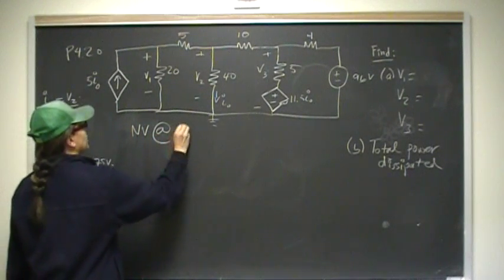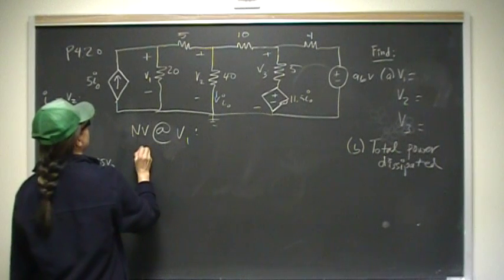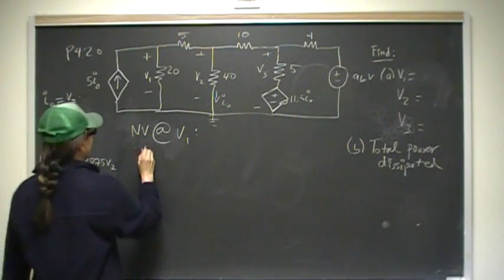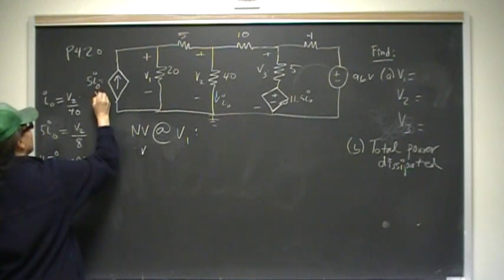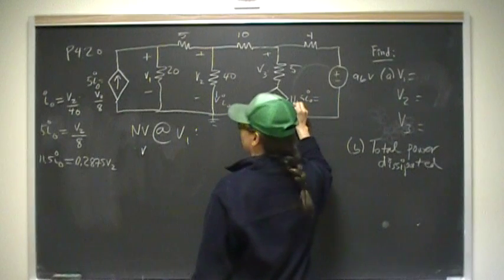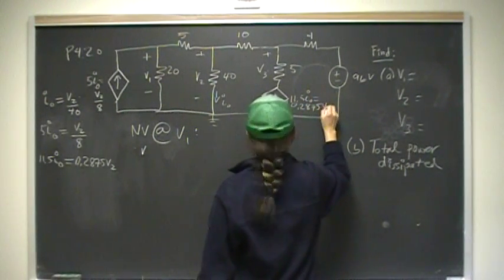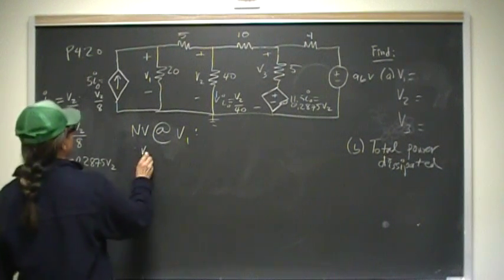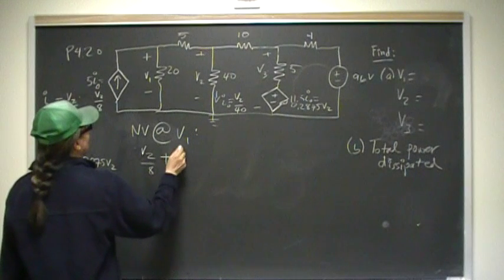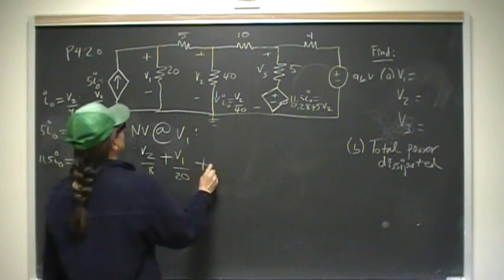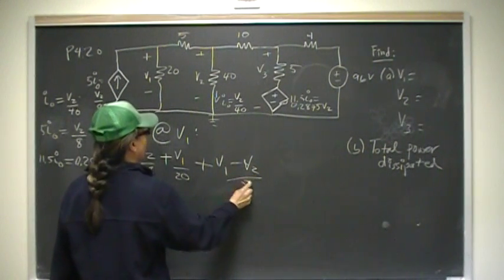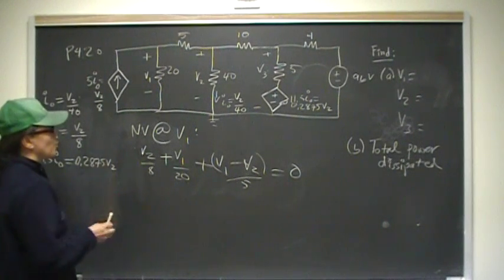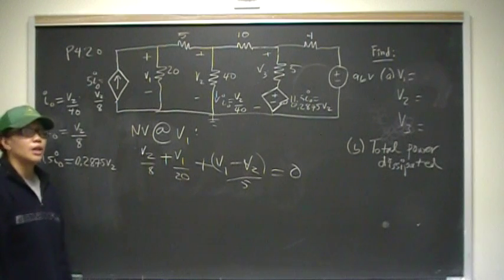We take the node voltage at V1 — this node right here. That gives us the current from the 5I₀ source, which we already said is V2 over 8. So the node voltage equation at V1 is: V2 over 8, plus V1 over 20, plus (V1 minus V2) over 5, all summing to zero. Remember, node voltage is KCL — it should always be voltage over resistance giving you current.